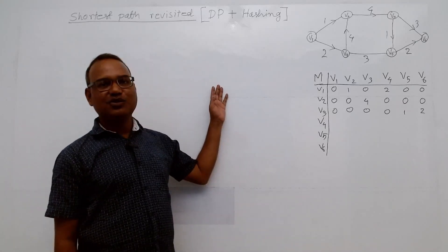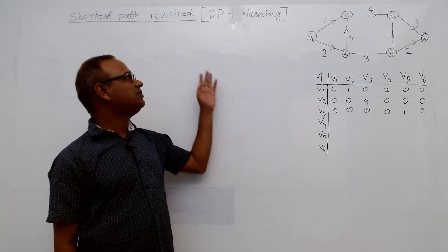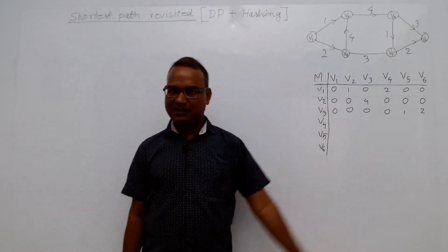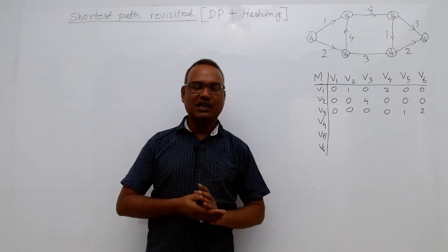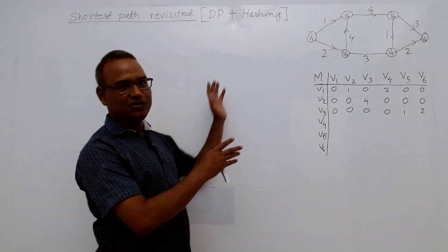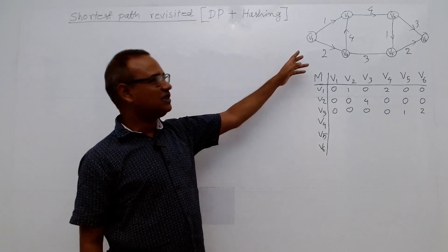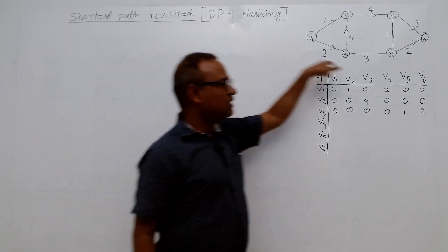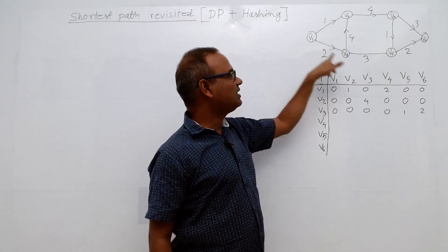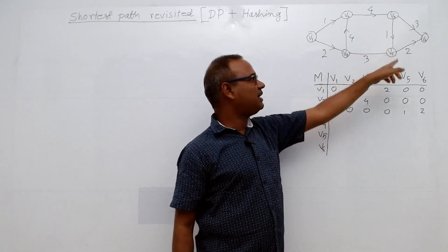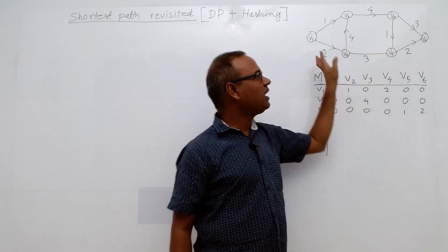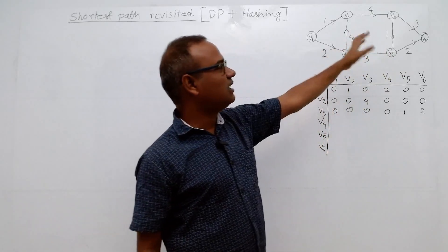Today we are going to revisit the shortest path problem using dynamic programming. In our first lecture, we solved this problem using dynamic programming on the same graph, but with vertices renamed V1, V2, V3, V4, and edges given randomly.